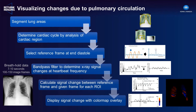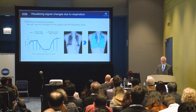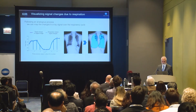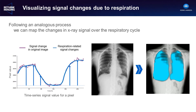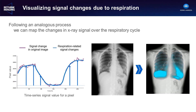We can generate a color map and use this to map that signal of x-ray intensity changes over the heartbeat. What we're essentially seeing is a color representation of the change in blood volume within any small region in the lungs. In an analogous way, we can do the same thing over the respiratory cycle and essentially create a map of how much the lung volume is changing region by region.